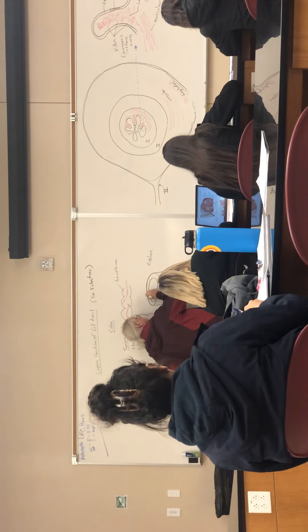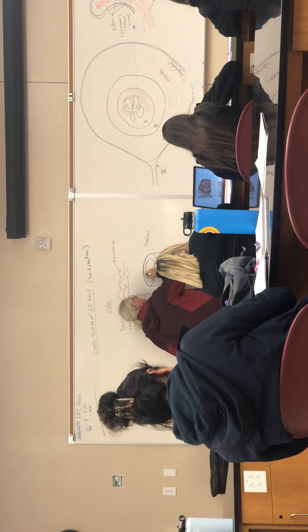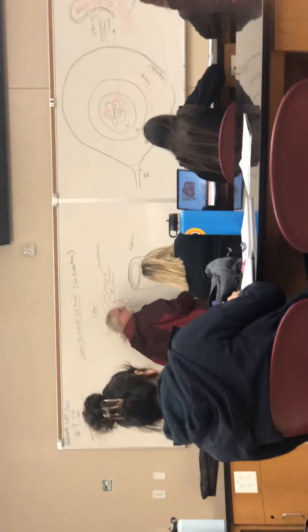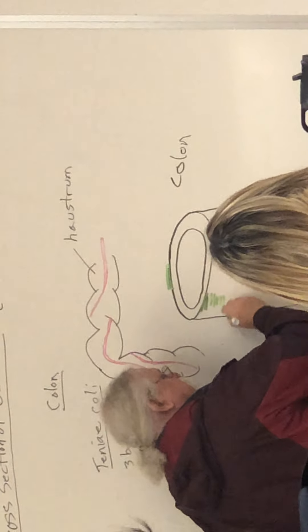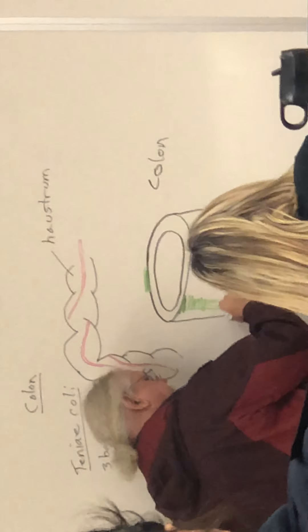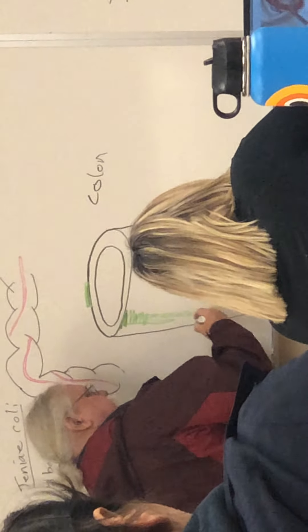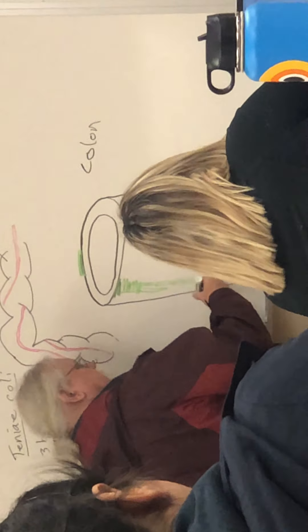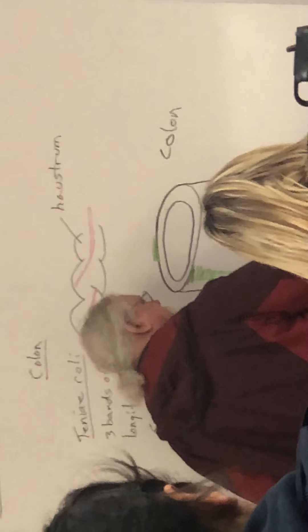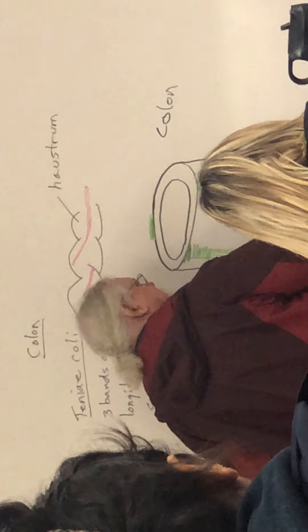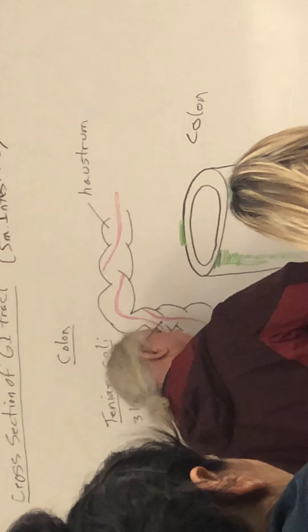One band of it is back here and going down the back side. Our second band is over here, coming down this side. Is this green? This is green. These are the three bands.